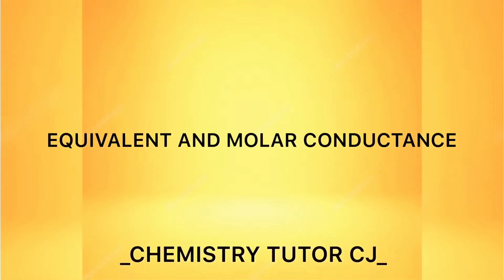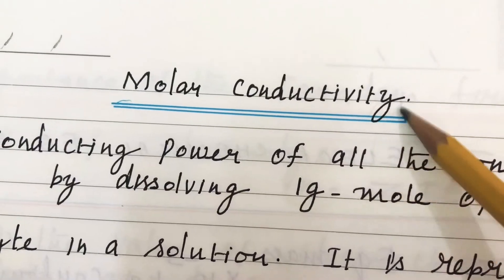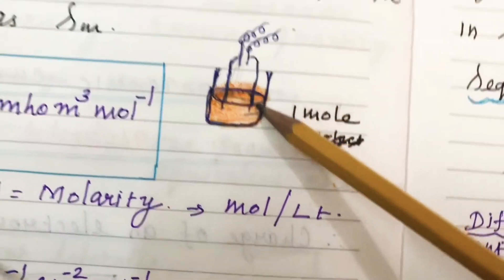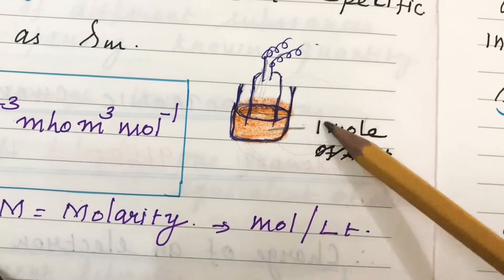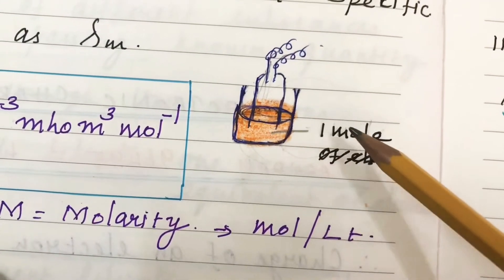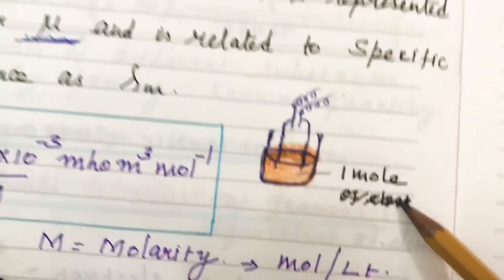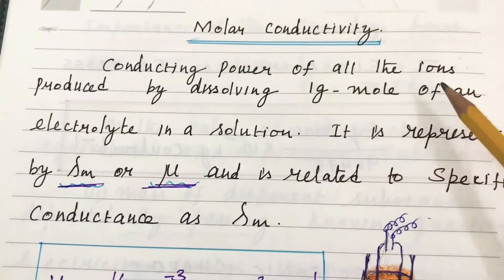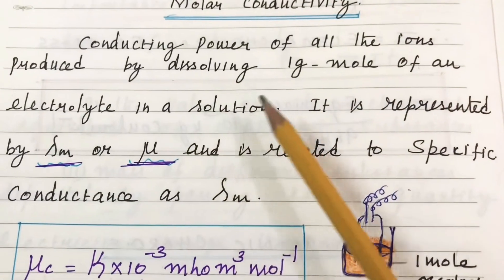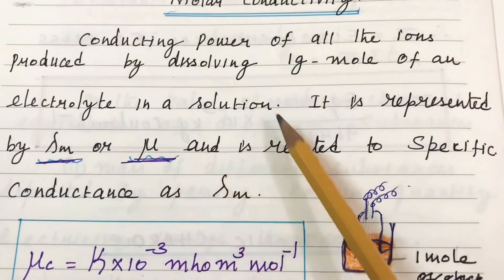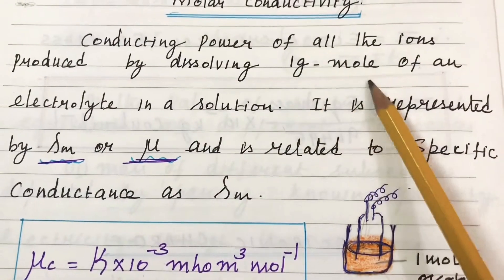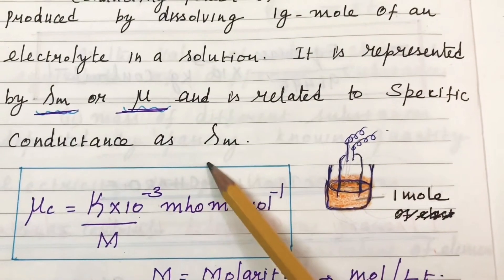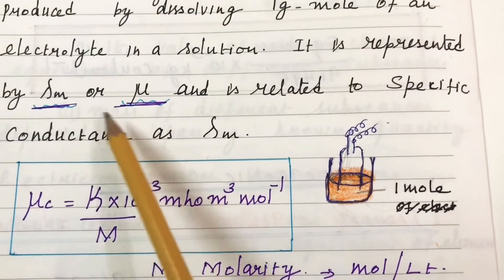In this video, we are going to see equivalent and molar conductance in electrochemistry. Molar conductivity is the conducting power of all the ions produced by dissolving one gram mole of an electrolyte in a solution. It is represented by mu or lambda m.